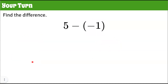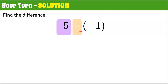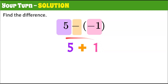Here's another one for you. Find the difference — pause here and come back when you're done. Welcome back. Using keep, change, opposite: keep five, change subtraction to addition, and the opposite of negative one is positive one. Five add one is six.